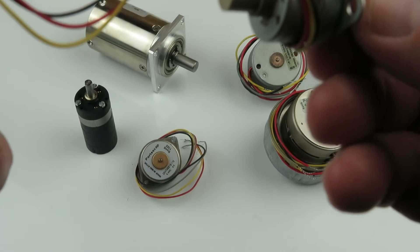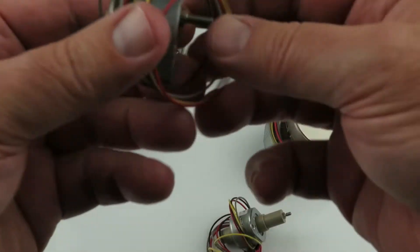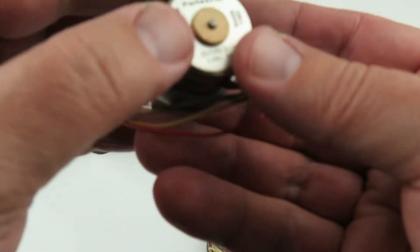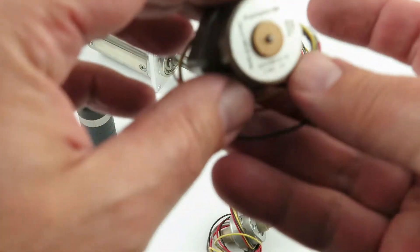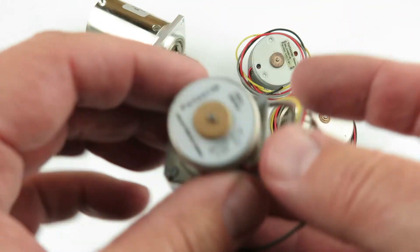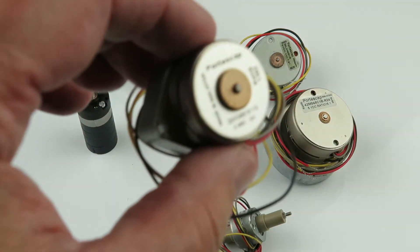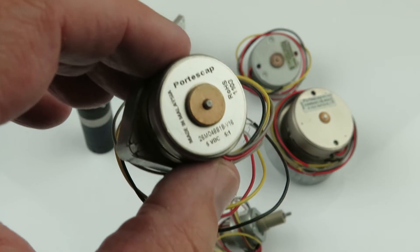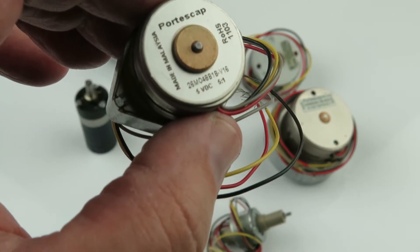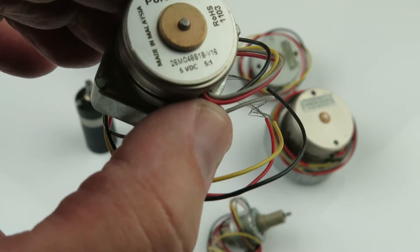Four wires: tan, black, red, and yellow. Same wire setup in here. This is a 5 volt, 5 to 1 ratio. Let's see if we can get that focused. 5 volt on that, ROHS, 5 to 1 ratio.